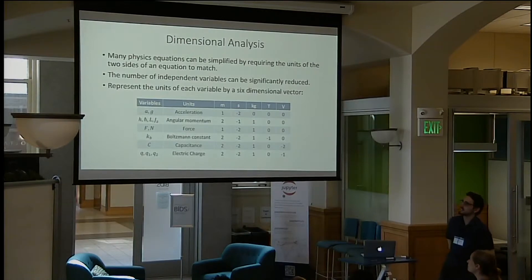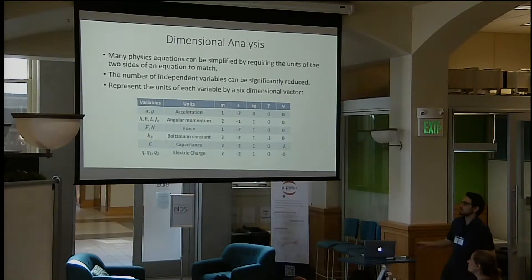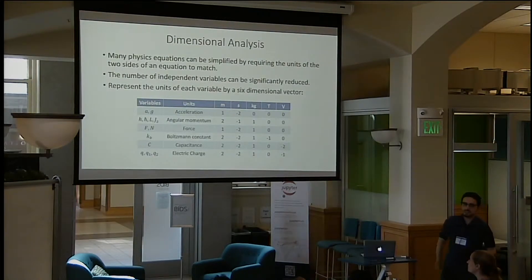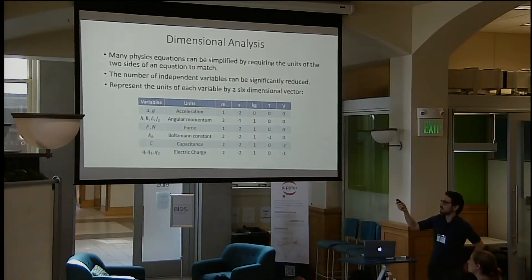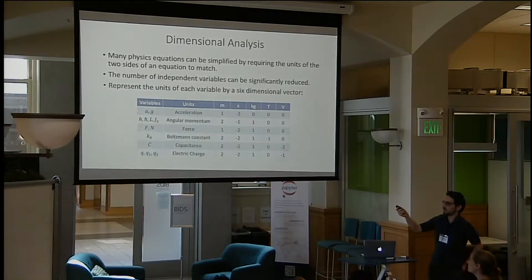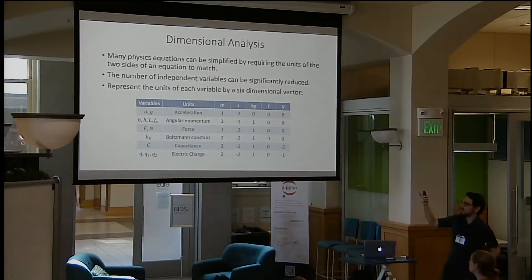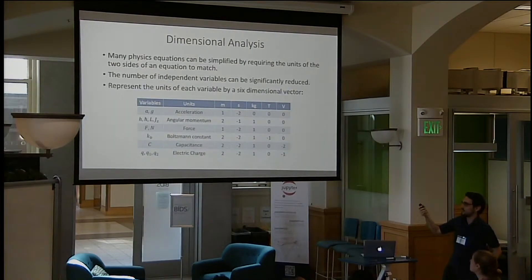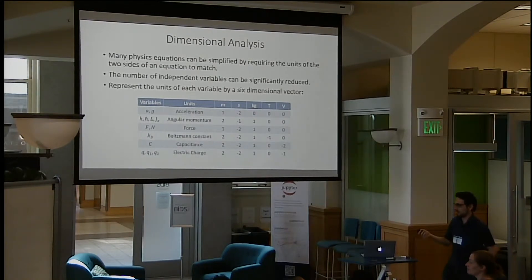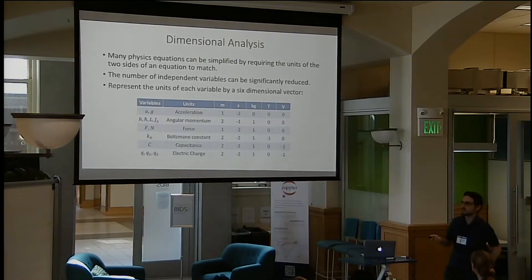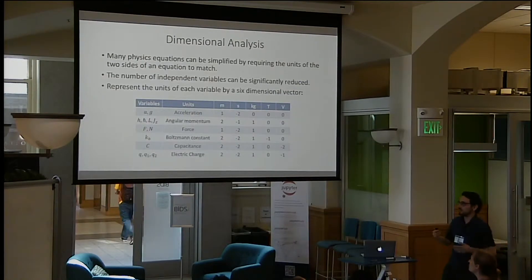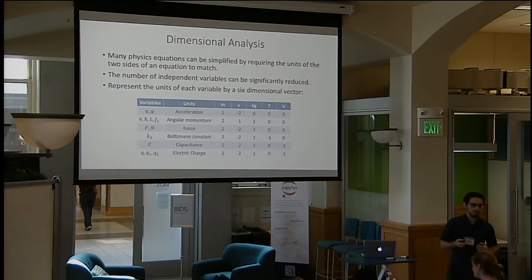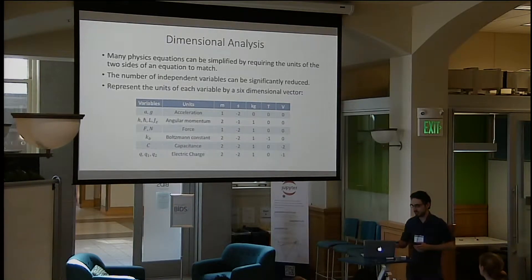Dimensional analysis simply takes advantage of the fact that variables in physics have units. We associate to each variable a five-dimensional vector in terms of the fundamental SI units. For each equation, we build a matrix out of these vectors, then we build the null space of that matrix, and from there we can extract dimensionless variables. The number of variables in the newly created equation equals the dimension of the null space, so it is significantly lower than the initial number of variables.